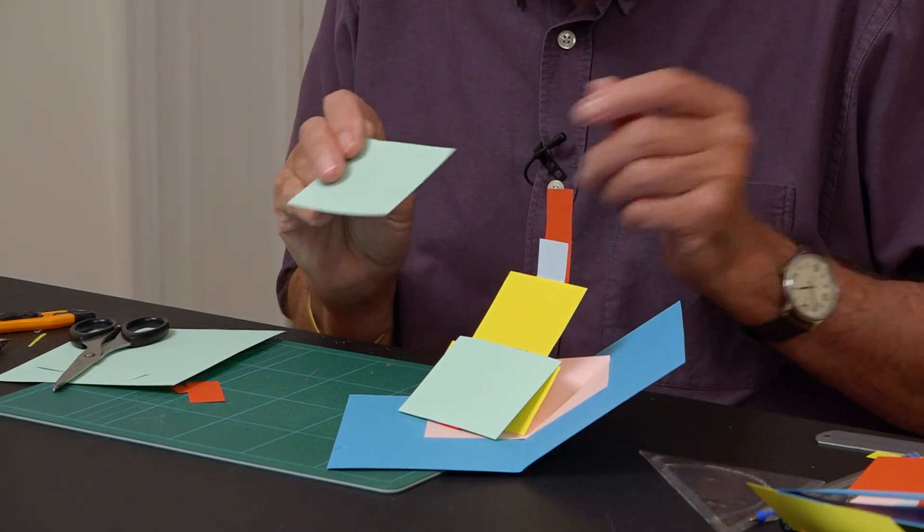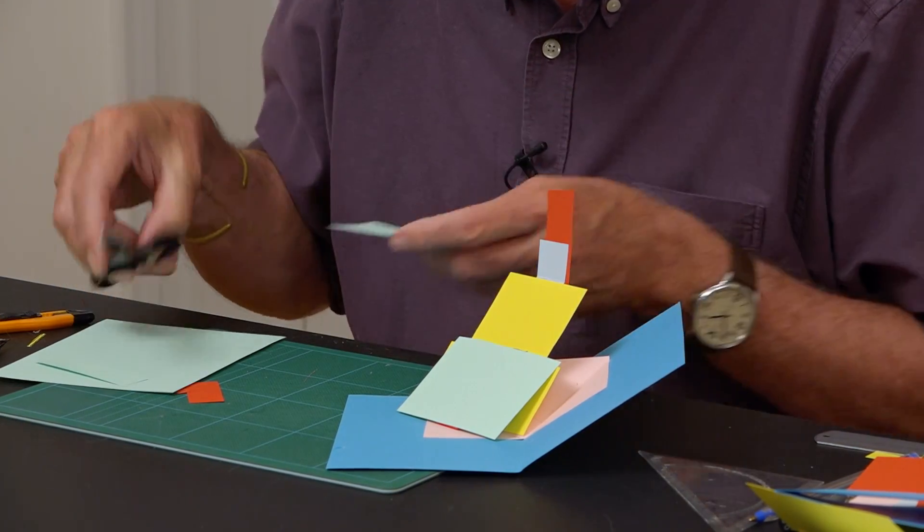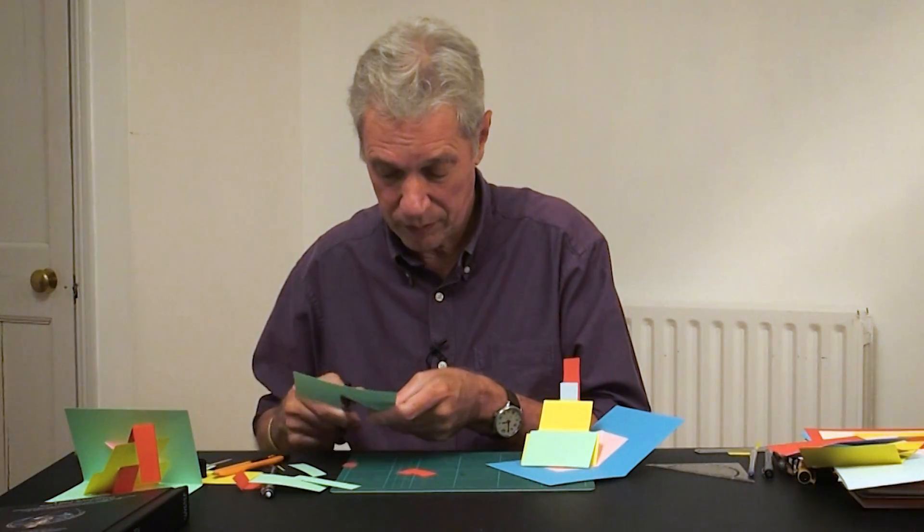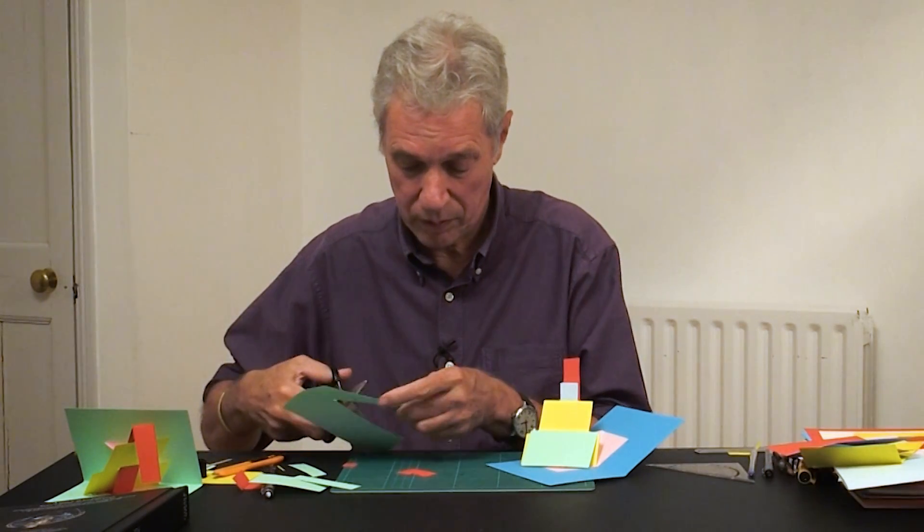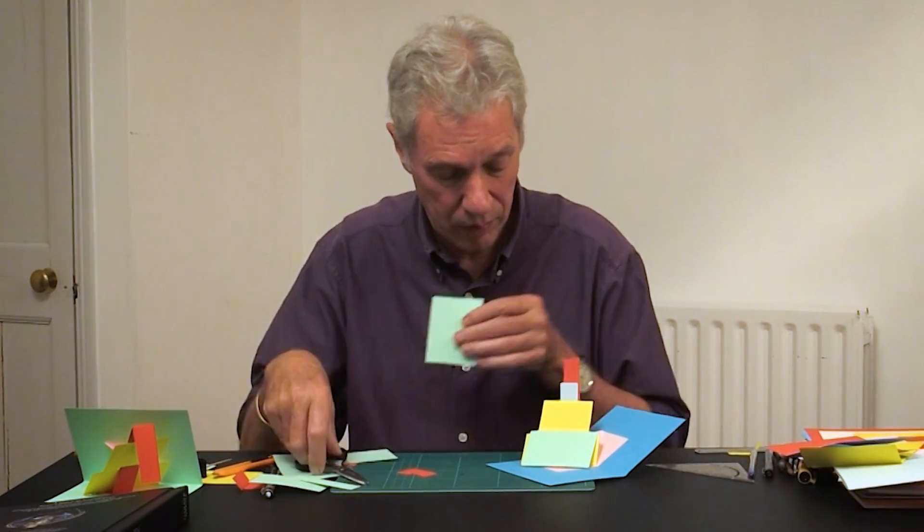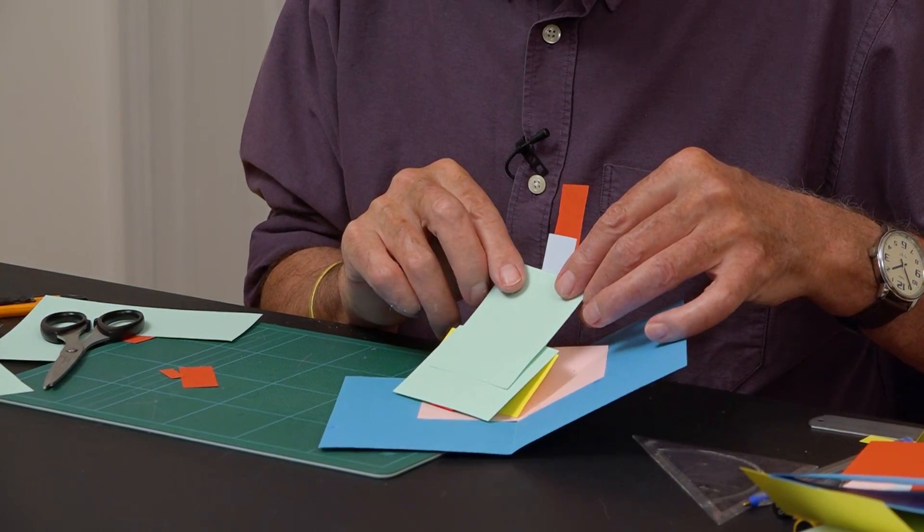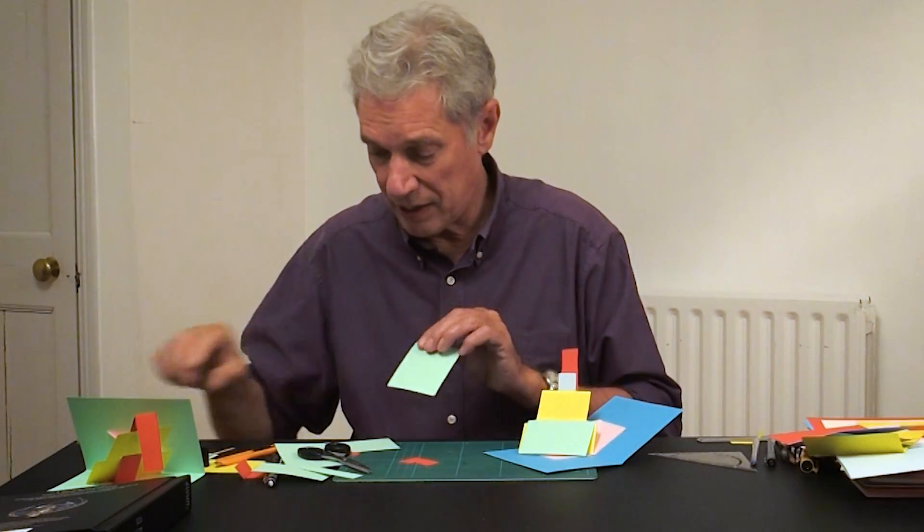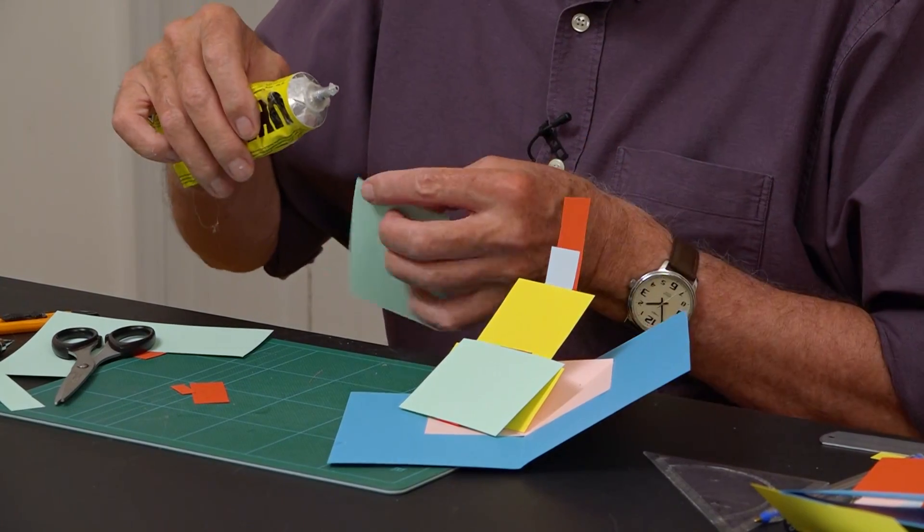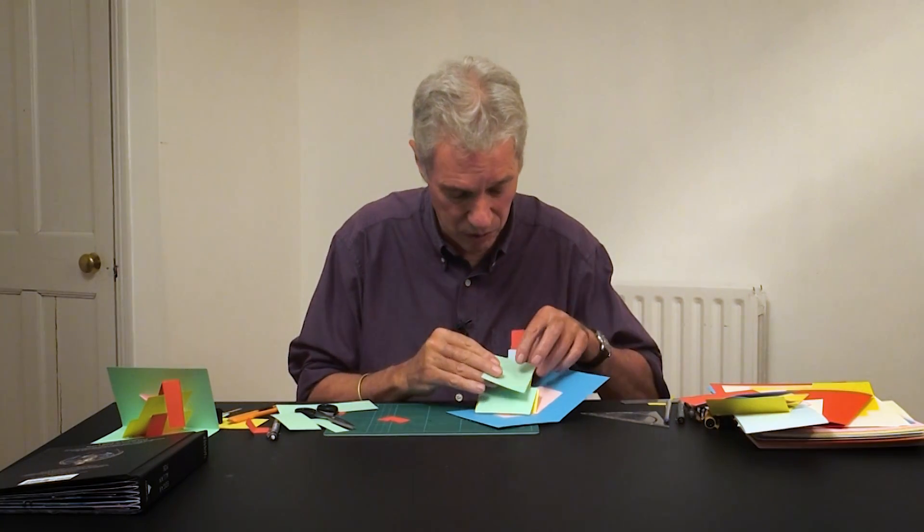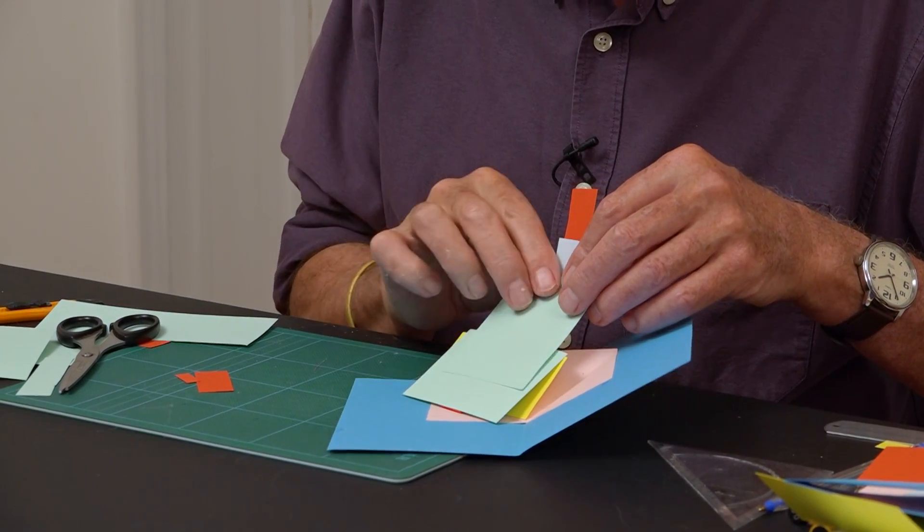And now there's another overlapping piece of green. There's an overlapping piece of green there. So that will hide the mechanism really. Just put a small amount of glue on. Stick it on there.